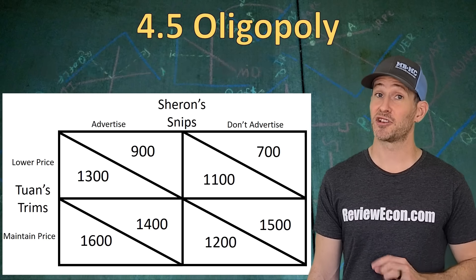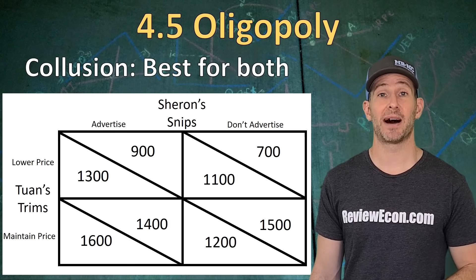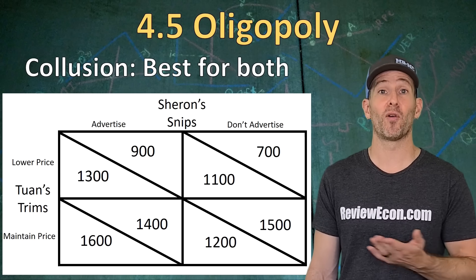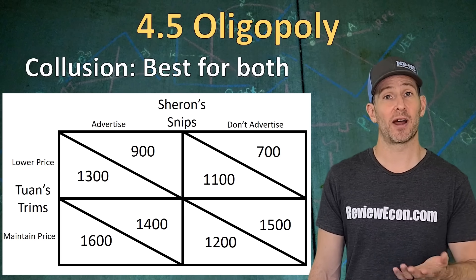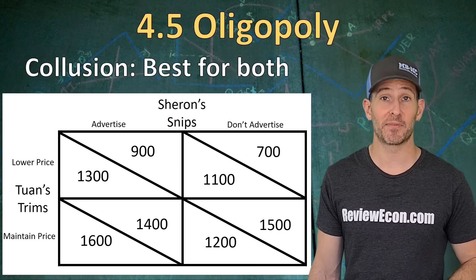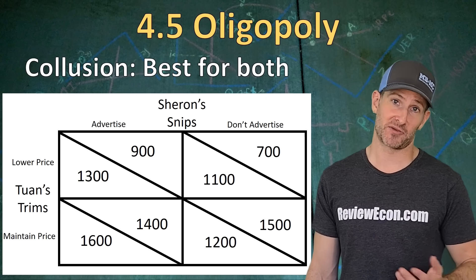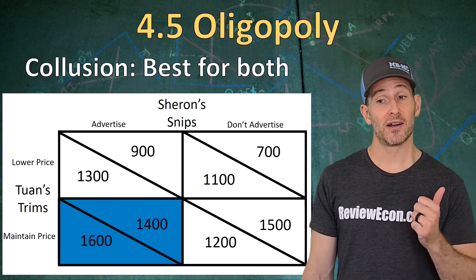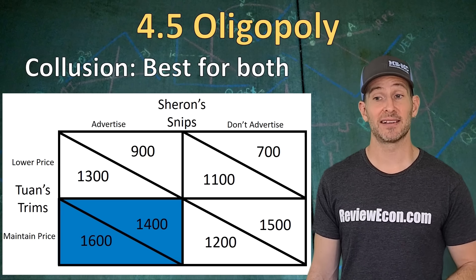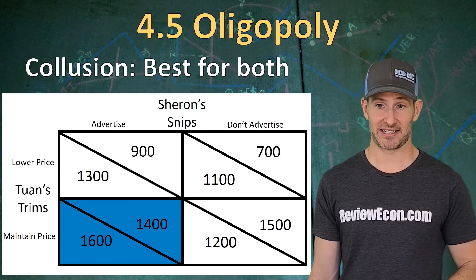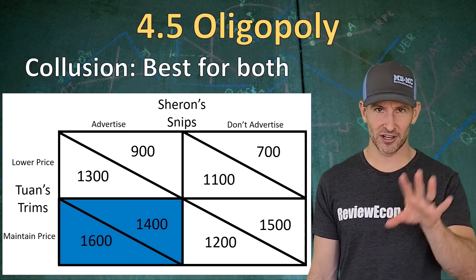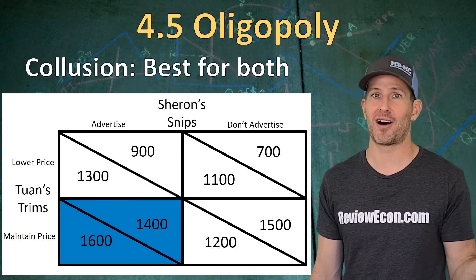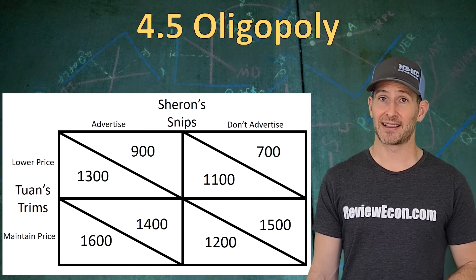The first type of question you could get on this payoff matrix is about collusion. Collusion is the best outcome for both players generally — I find it by adding up the profit to find the highest combined profit between the two firms. For this case, it's that lower corner where Twan's Trims is maintaining price and Sharon's Snips is advertising. That's the collusion outcome — you look at the matrix and decide where they would want to go if they could sit down together and talk it out.